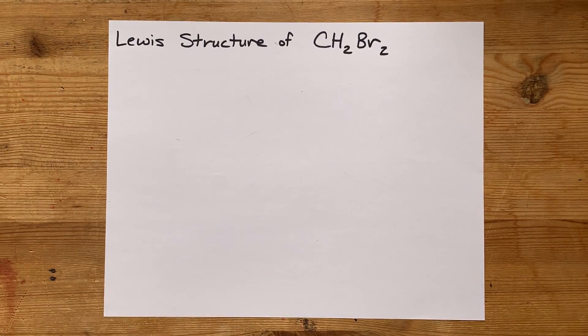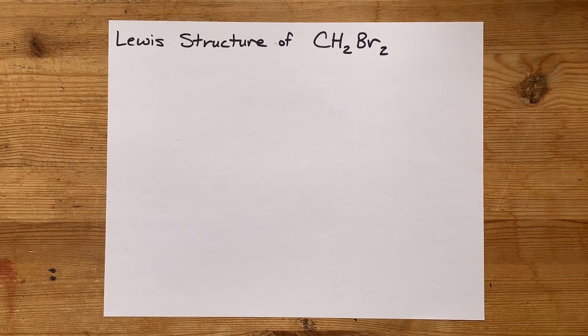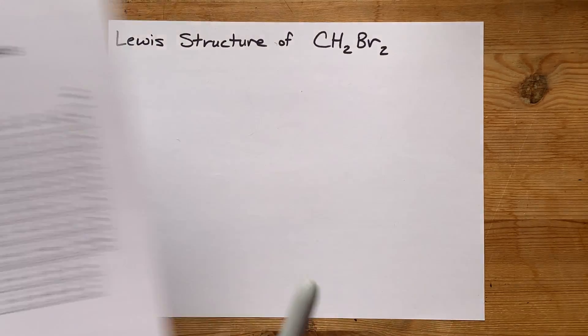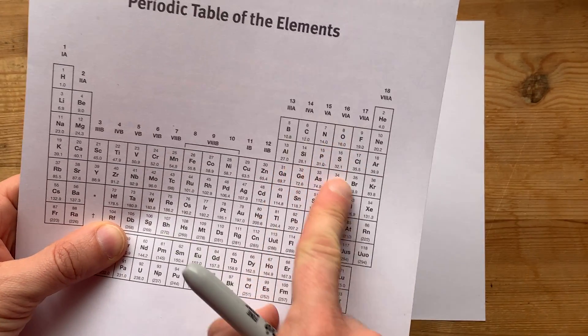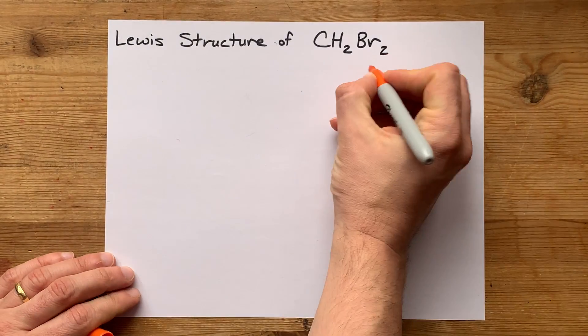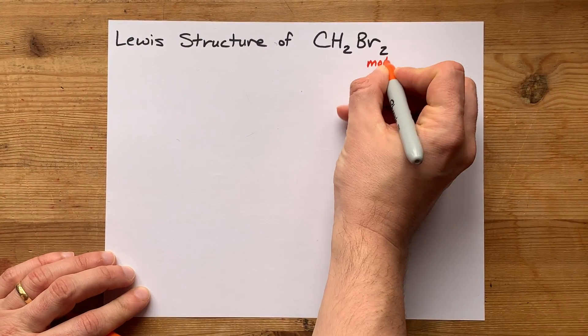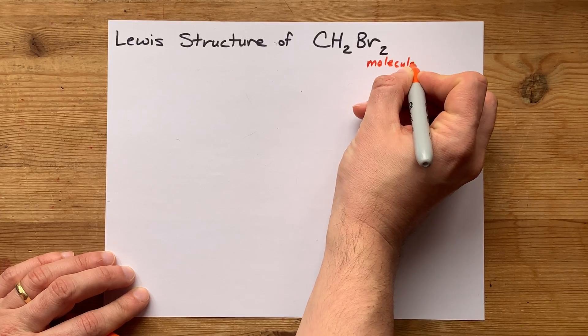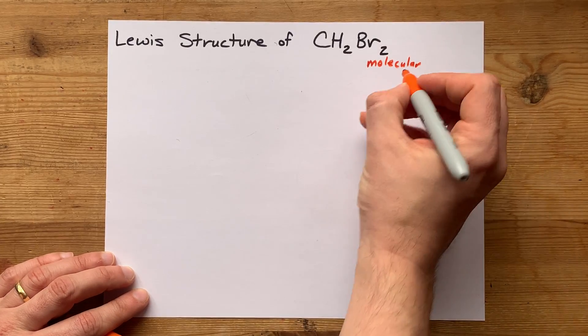We're going to draw the Lewis structure for CH2Br2, which is dibromomethane. Carbon, bromine, and hydrogen are all non-metals, so these are going to be covalently bonded together to form a single molecule. It's going to be a molecular compound.